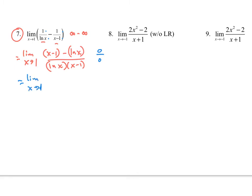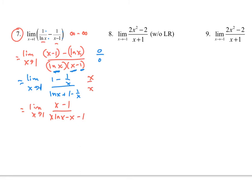With x approaching 1, we take the derivative of the numerator: 1 minus 1 over x. The derivative of the denominator requires the product rule: ln x times the derivative of (x minus 1), which is 1, plus (x minus 1) times 1 over x. Simplifying gives 1 minus 1 over x in the numerator. After clearing the fractions by multiplying through by x, we get the limit as x approaches 1 of (x minus 1) all over (x·ln x minus (x minus 1)). Plugging in x equals 1 gives 0 over 0 again.